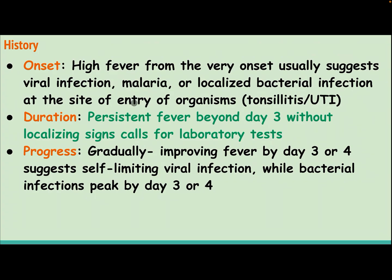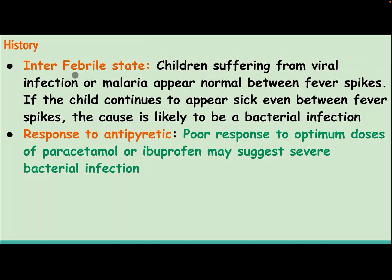History: Onset — high fever from the very onset usually suggests viral infection, malaria, or localized bacterial infection at the site of entry of the organism, such as tonsillitis or UTI. Duration — persistent fever beyond day 3 without localizing signs calls for laboratory tests. Progress — gradually improving fever by day 3 or 4 suggests a self-limiting viral infection, while bacterial infection peaks by day 3 or 4. Children with viral infection or malaria appear normal between fever spikes.